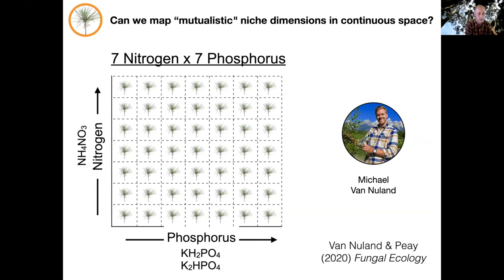For ectomycorrhizal fungi, probably the most important niche dimensions are the host plants they can colonize, but also the two key macronutrients that are the primary currencies they provide for their hosts: nitrogen and phosphorus. To test ideas about this mutualistic niche, a postdoc in my lab, Michael van Nuland, and I designed an experiment to grow pine seedlings in a factorial continuous gradient of nitrogen and phosphorus concentrations. We used seven different factorial combinations of increasing nitrogen and phosphorus concentrations — seven by seven — so a single replicate of this experiment had 49 seedlings.